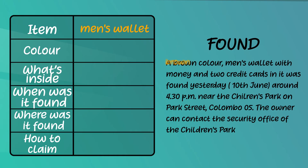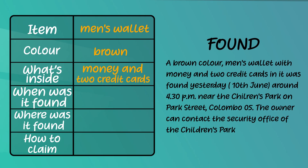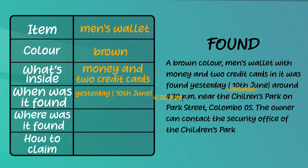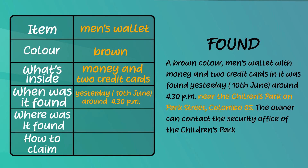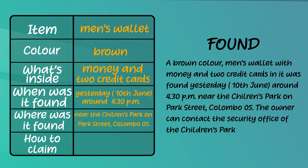What about the third one — what's inside? There seems to be lots of things inside: money and two credit cards. When was it found? Yesterday, that is 10th June, around 4:30 pm. Where was it found? It was found near the children's park, on Park Street, Colombo 5.